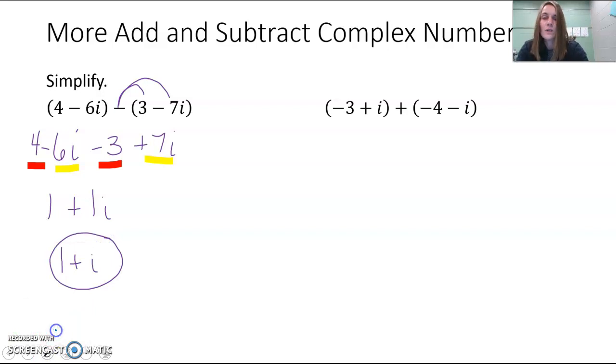Now if we move on to our second one, the quantity negative 3 plus i plus the quantity negative 4 minus i. Here the parentheses aren't really necessary because you're just adding the two. So I'm just going to drop them. Negative 3 plus i plus negative 4 minus i.